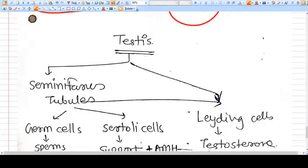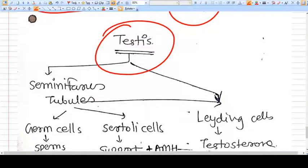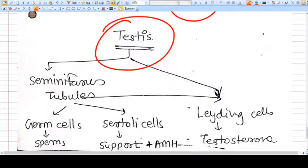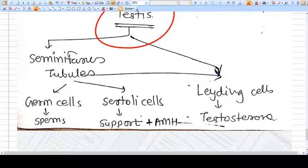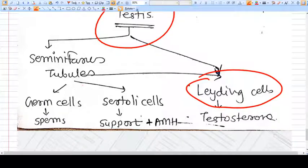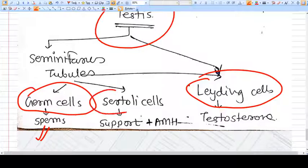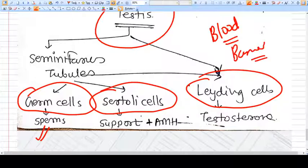Again, it is very important: testis is made by two things, seminiferous tubules and stroma. Seminiferous tubules have germ cells which will develop into sperm. They have a special kind of cell, that is Sertoli cells, which support the growth of sperm, create the blood-testis barrier, and secrete AMH.